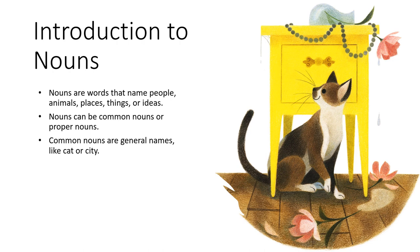Common nouns are general names like cat or city. As we see in this picture, here is a beautiful cat. If you knew the name of this cat, that would be called a proper noun. But just saying the word cat just identifies what it is that you are looking at — that is called a common noun.